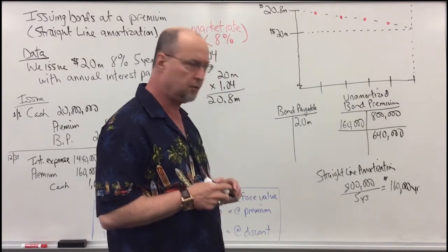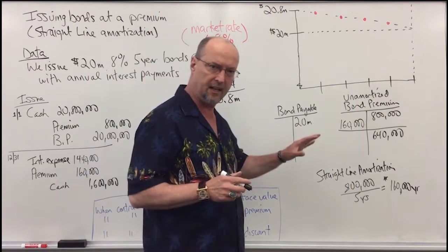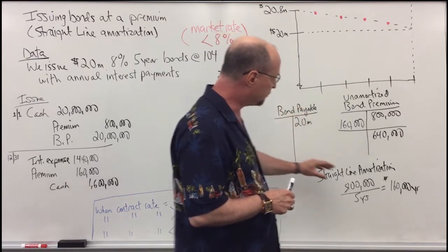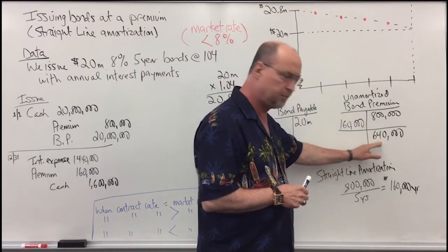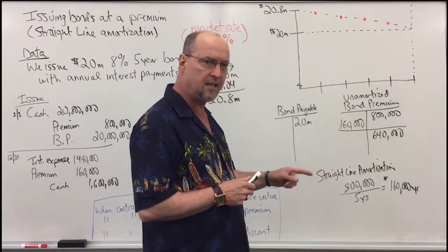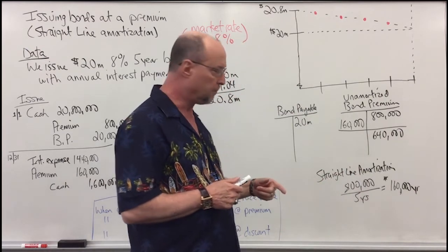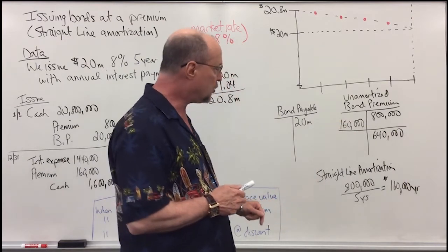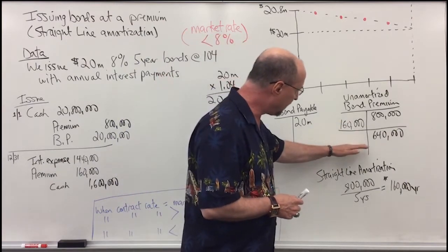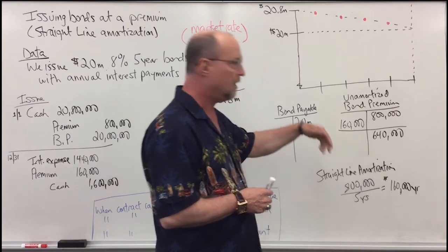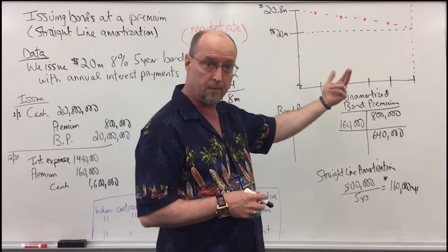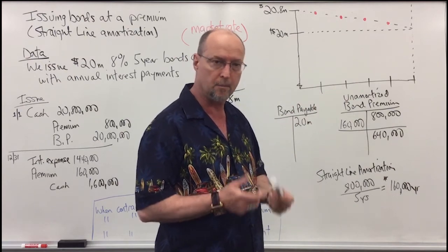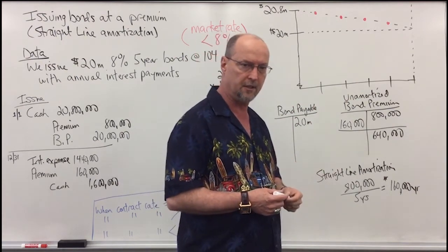On the balance sheet, I have to report bonds at book value. The book value is $20 million plus the unamortized premium of $640,000. So at the end of year one, the balance sheet book value will be $20,640,000. Each year that we amortize it, it goes down by $160,000, so that at the end of the fifth year when we pay the bonds back, we're simply paying back $20 million, which will be the book value at the end of the fifth year.